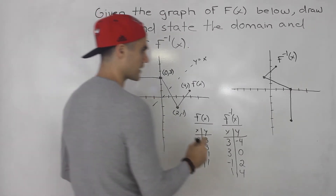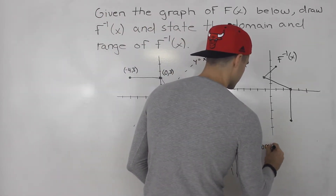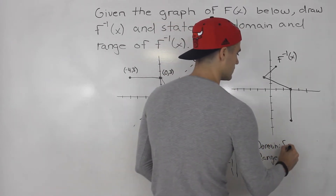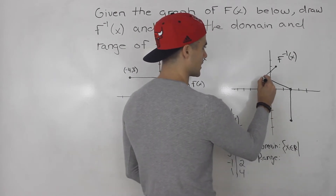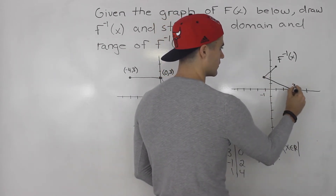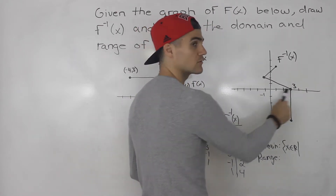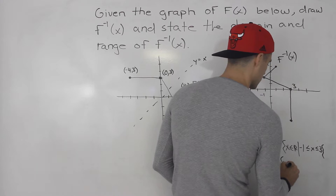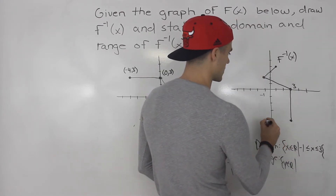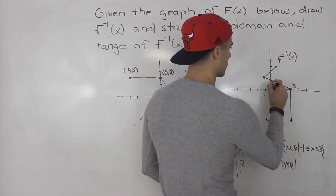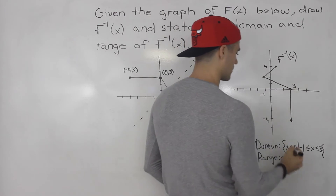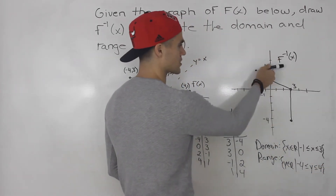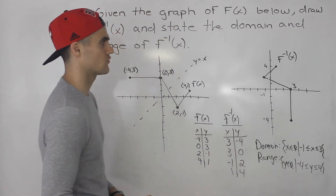We also have to state the domain and range for the inverse. The domain: x has to be between negative 1 and positive 3. All the x values are between negative 1 and positive 3. The range: y has to be between negative 4 and positive 4. All of the y values are between negative 4 and positive 4. So that's the domain and range for the inverse.